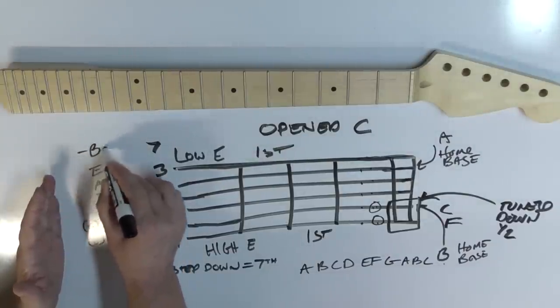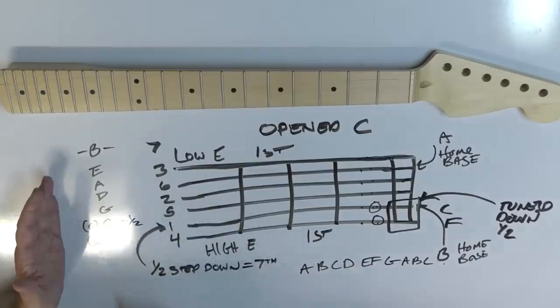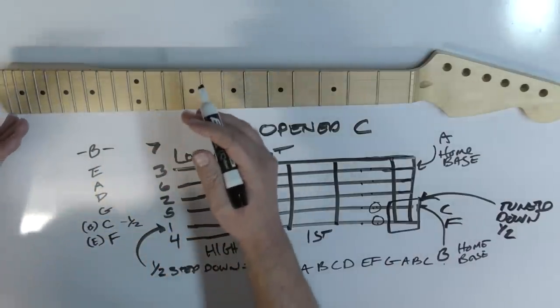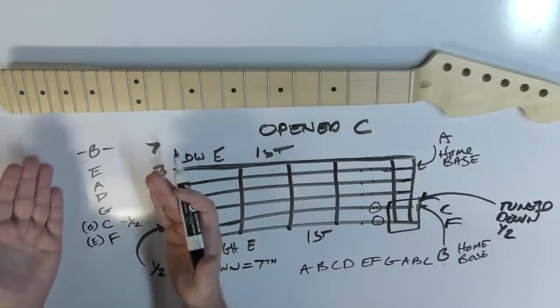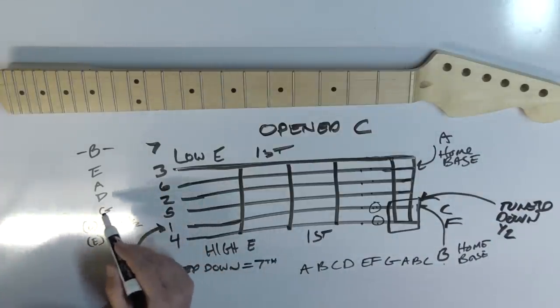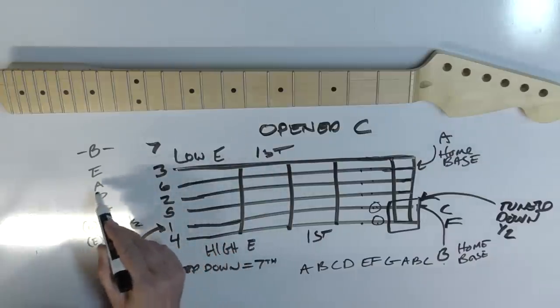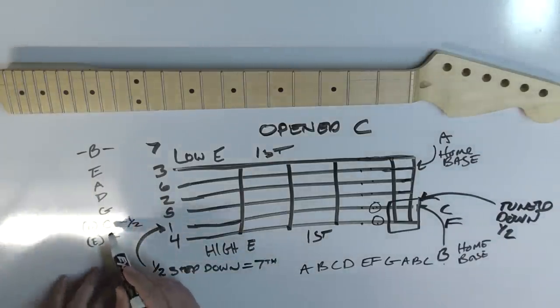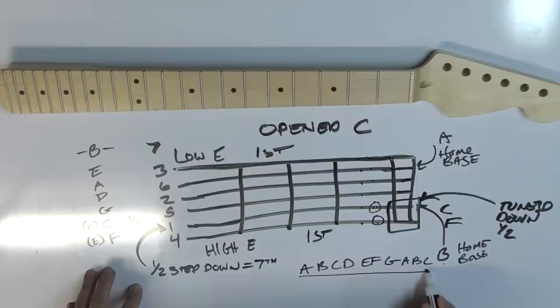So let's go ahead and I'm going to use this section over here to look at these open notes. We end up having our E, we have our A, we have our D, we have our G. This, even though it's a B, we're going to call it a C, and there's our F. Remember, this is just tuned down a half step for functionality with the chords. Then we also end up having, if we had a seven string, we would have a B up here, or this right here would end up being a half step down.